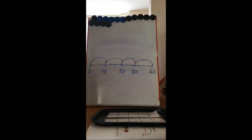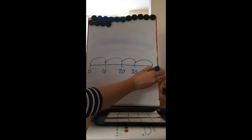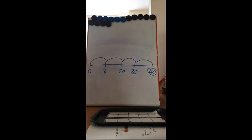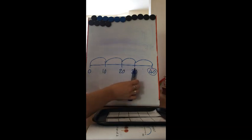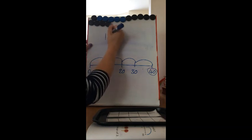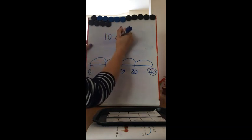Here is the number line that Joe has drawn out. The first question: how many counters are in the bag? I think there are 40 counters. The next question asks how many counters are in each group — we work out how many are in each jump on our number line. 0 to 10: there's 10. 10 to 20: there's 10. 20 to 30: there's 10. 30 to 40: there's 10. So there are 10 counters in each group.